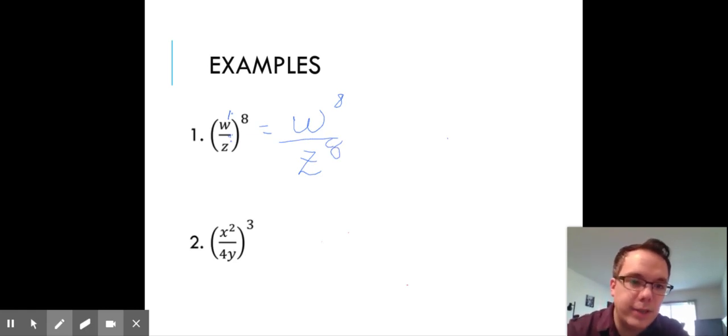And w and z are different bases, so we can't subtract anything. And there's no numbers to simplify. So w^8 over z^8 is our most simple answer.